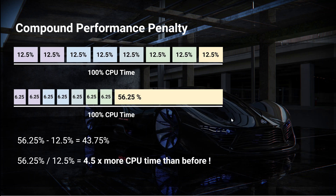Let's have a look at a simplified example of what the compound performance penalty means. In the case at the top, you have an application which in total consists of eight layers. Each of these layers is taking the exact same amount of time — probably not realistic in the real world, but let's assume that for the sake of the calculations. That means each layer takes 12.5% of the total CPU time, and that leaves 12.5% of the CPU time for your application.